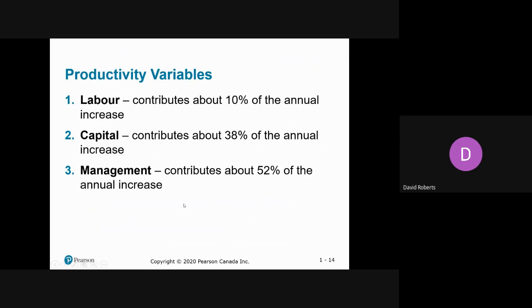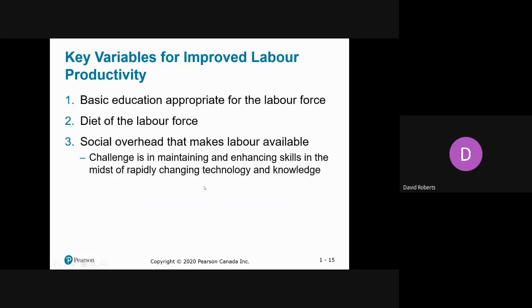Major input factors: labor accounts for about 10% of annual productivity increase, capital is 38%, and management is about half. You will become managers, so think about that — you have the largest effect on whether productivity goes up or down by finding new ways to do things. This is a constant challenge in your career. Key variables include the education level of the workforce, training, and showing people how to use equipment properly.